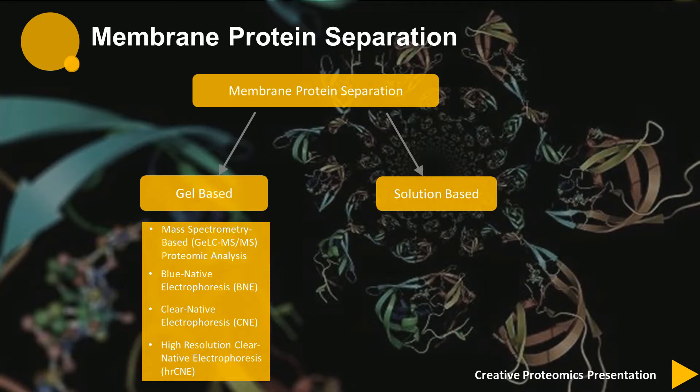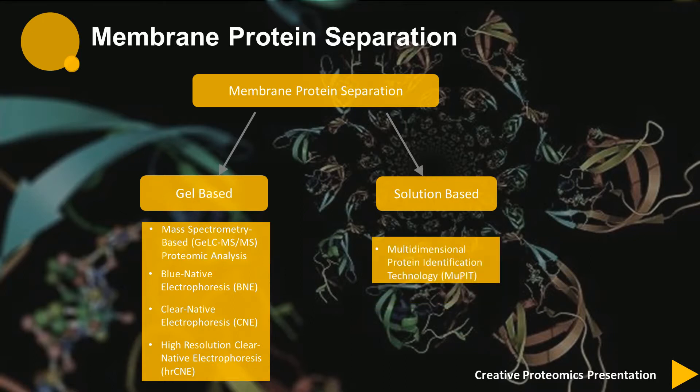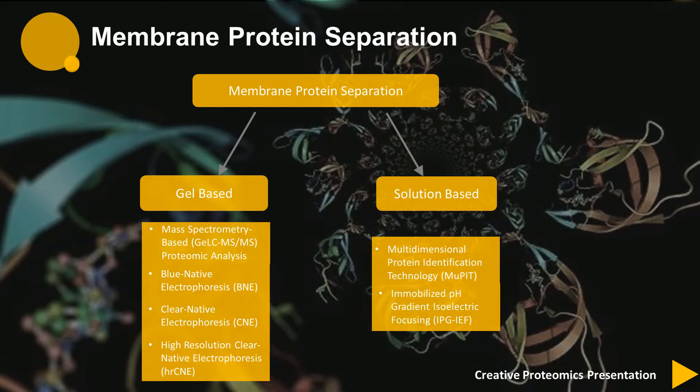Speaking to solution-based separation, multidimensional protein identification technology is a 2D chromatographic approach to separating proteins, in which proteins are digested into peptides and the peptides are separated by using strong cation exchange and reverse phase chromatography. Another approach to separating peptides or proteins is immobilized pH gradient isoelectric focusing.